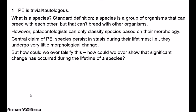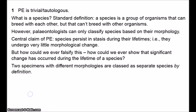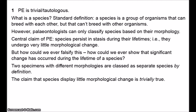How could we ever show that significant change has occurred during the lifetime of a species? Obviously what we would have to do is find two specimens of the same species with significantly different morphologies. But if we did find two specimens with significantly different morphologies, they would be classed as different species just by definition — because morphology is how paleontologists distinguish species. So it follows that stasis is true. But this truth is completely trivial — it's a tautology.